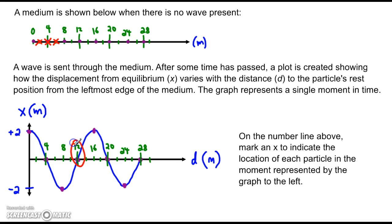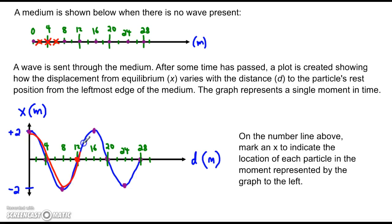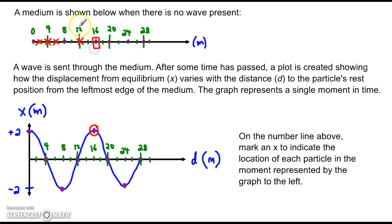The next particle has rest position equal to 12 meters. Is that particle still at 12 or has it been moved? The displacement — the y-value — is zero; the curve is on the x-axis at this data point, so there is no displacement. The next one: rest position 16 meters — that particle has been displaced positive two meters, so it's been pushed two meters to the right.